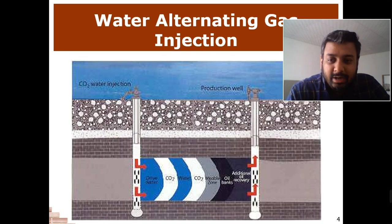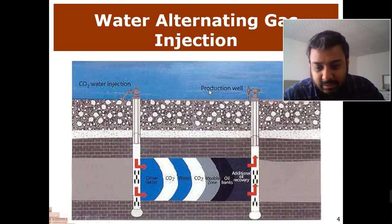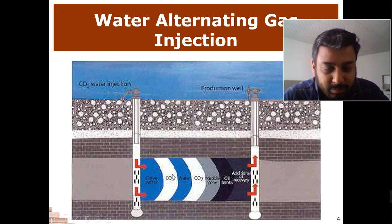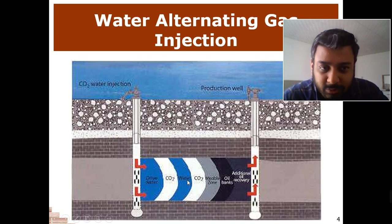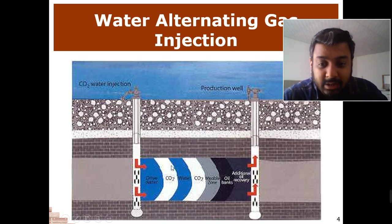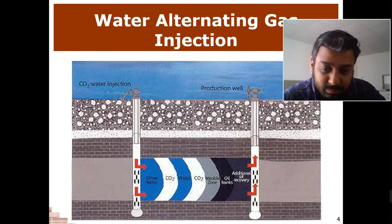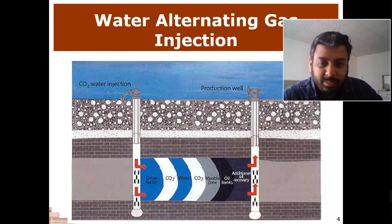The parameters that matter include: the distance between injection and production wells, the concentration of CO2, how much CO2 you are injecting, how much water you are injecting, the injection pressure of water, the injection pressure of CO2, the injection rate of water, the injection rate of CO2, the temperature of the water, and the temperature of the CO2 being injected. Are you injecting CO2 with some additives or just simple CO2? These parameters are actually changing — they are not fixed.